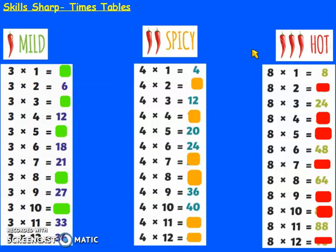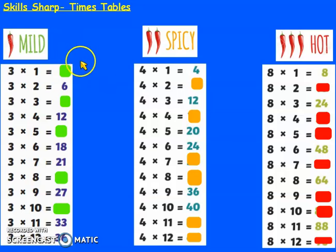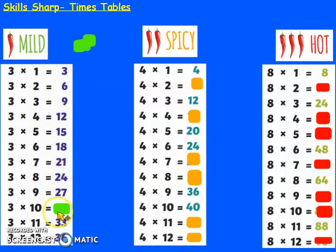Have a look at the times tables on the screen. In your maths book, write the full calculation which has a missing answer, and write the missing answer in. Give yourself a few minutes and press play when you're ready to mark. Have you got your blue pen ready? Don't forget you've got your times table grid in your pack if you need help. Shout your answers out. 3 times 1 is 3. 3 times 3 is 9. 3 times 5 is 15. 3 times 8 is 24. 3 times 10 is 30. Well done if you got those right.